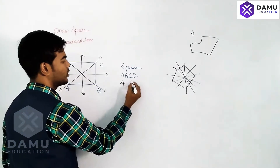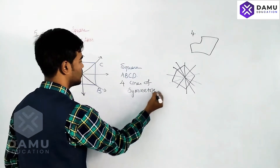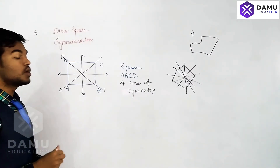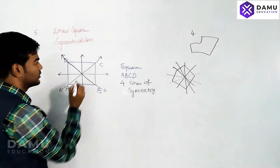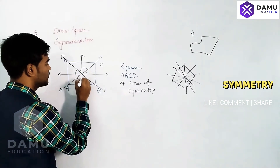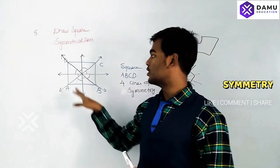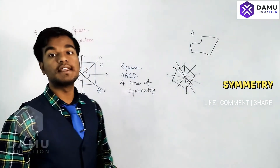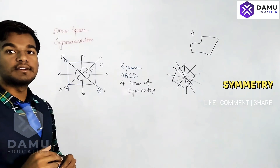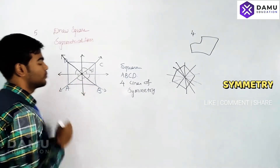So the square has four lines of symmetry in total. Now, what is the angle between the axes of symmetry? Looking at this, you can say the angle between each pair of adjacent axes is just 45 degrees.